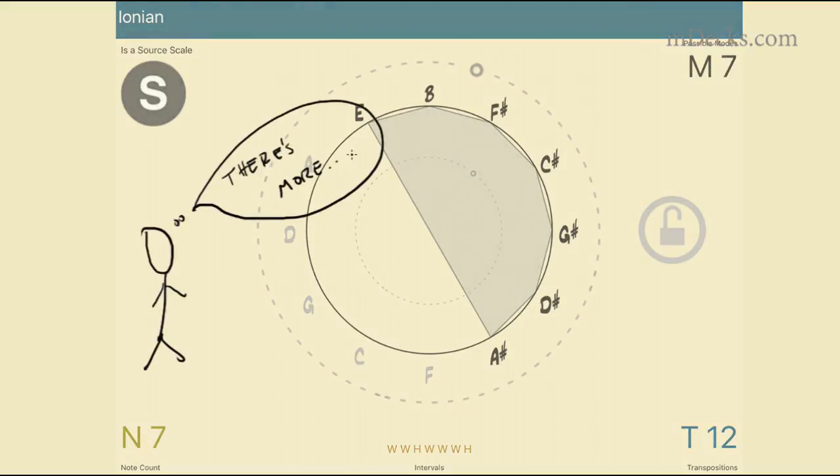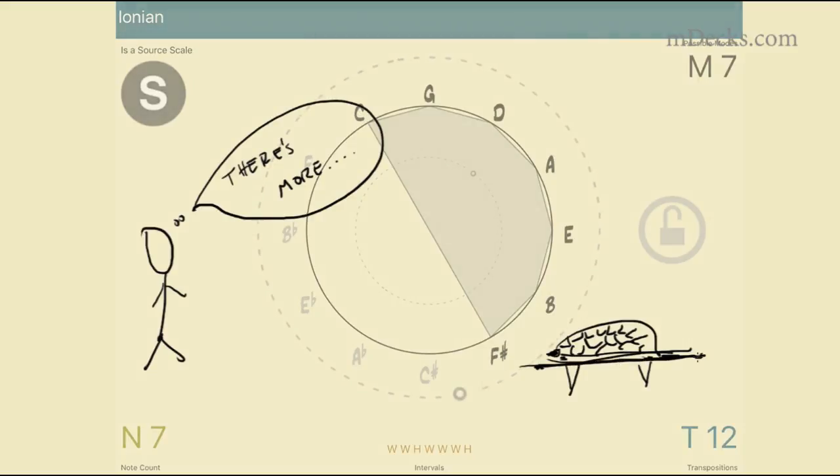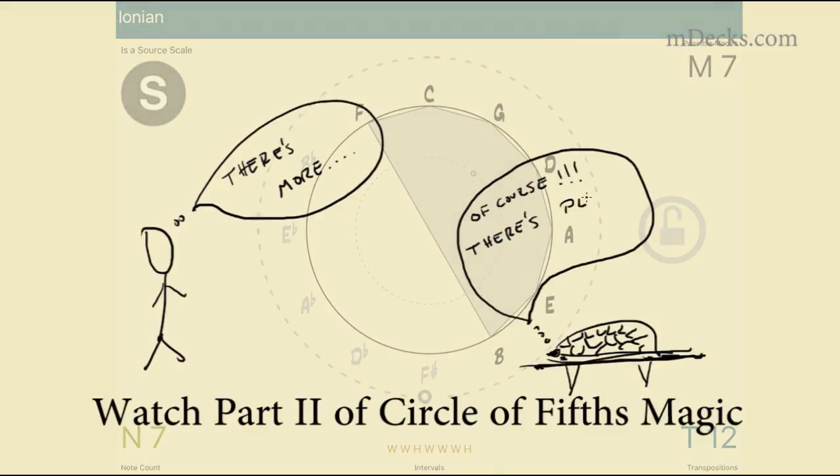That's not all. Let's now turn the graph around to see what happens. Let's lock the outside wheel to the inner wheel first.